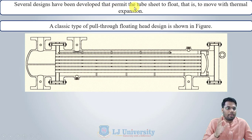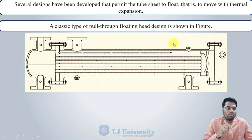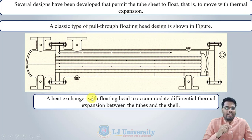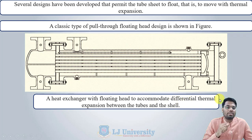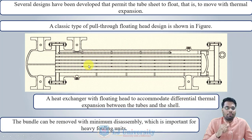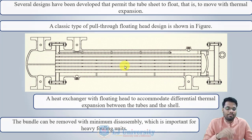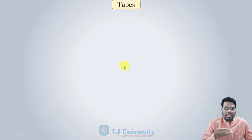Several designs have been developed that permit the tube sheet to float — that is, to move with thermal expansion. A classic type is the pull-through floating head design. In this heat exchanger, a floating head accommodates differential thermal expansion between the tube and the shell, and the bundle can be removed with minimum disassembly, which is important for heavy fouling units.